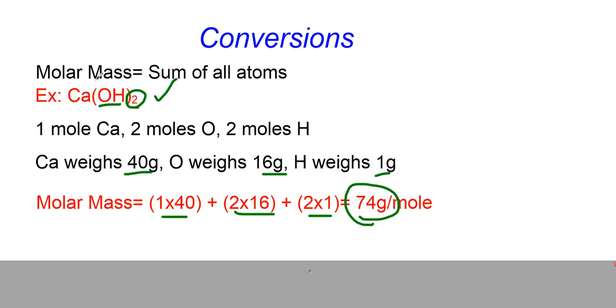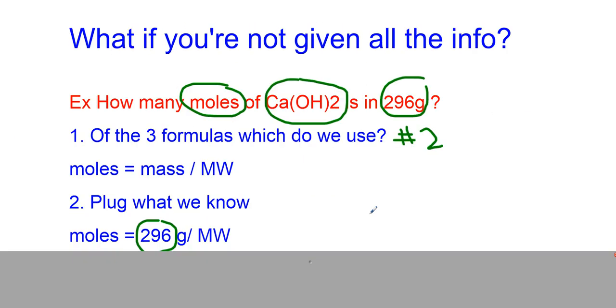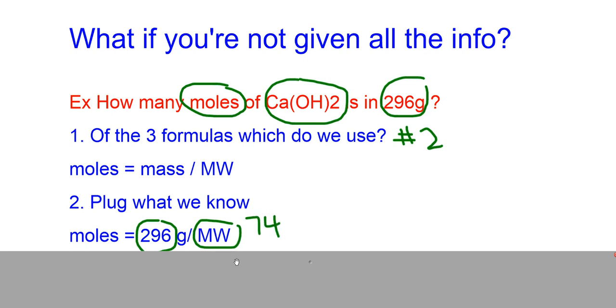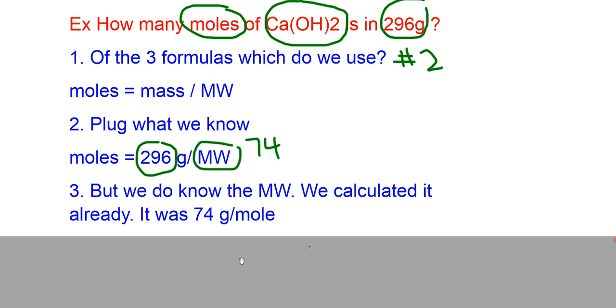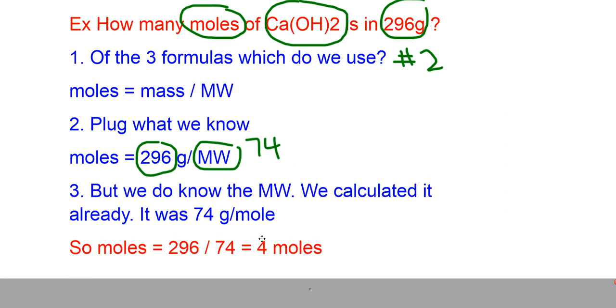Remember I reminded you, this is how you do calcium hydroxide. We added up the atoms and we said it was 74. So now I know that this number over here must have been 74. So now I can plug in both numbers. It's 296 divided by 74. And now I can get my final answer. And I now have figured out that in this problem there must have been 4 moles.